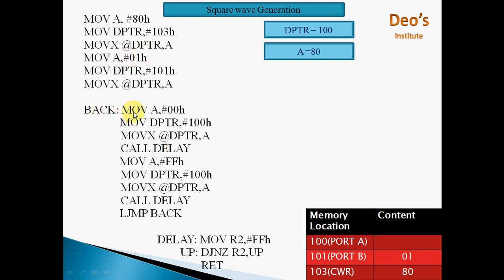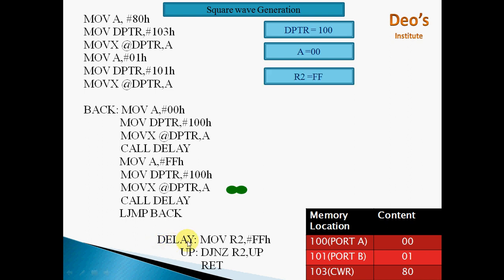Then MOV A, #00H — 00H will be moved. MOV DPTR, #100H — 100H is the address of Port A. MOVX @DPTR, A — 00H will be moved to Port A and Port A will send it to DAC. After this we execute CALL DELAY. In the delay routine: MOV R2, #FFH — till this delay executes, Port A continuously sends 00H to DAC.